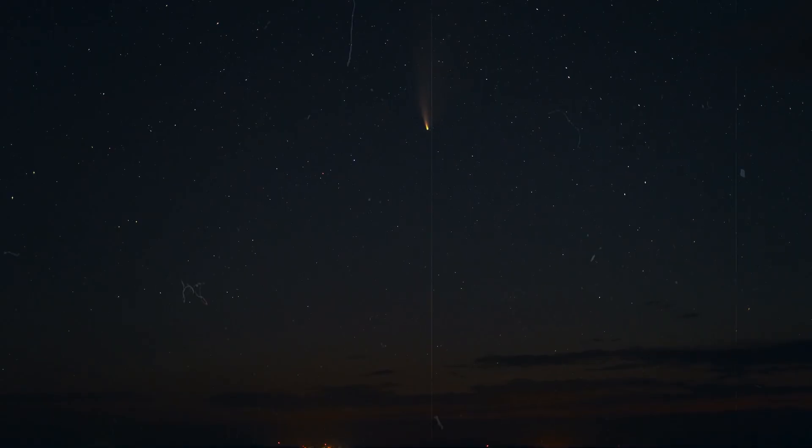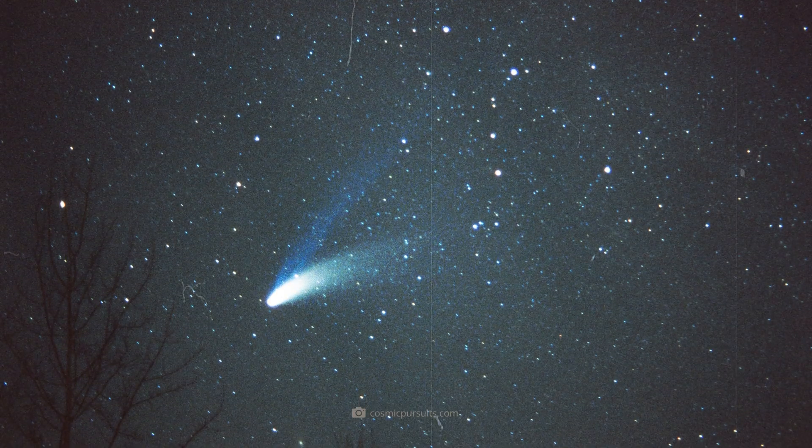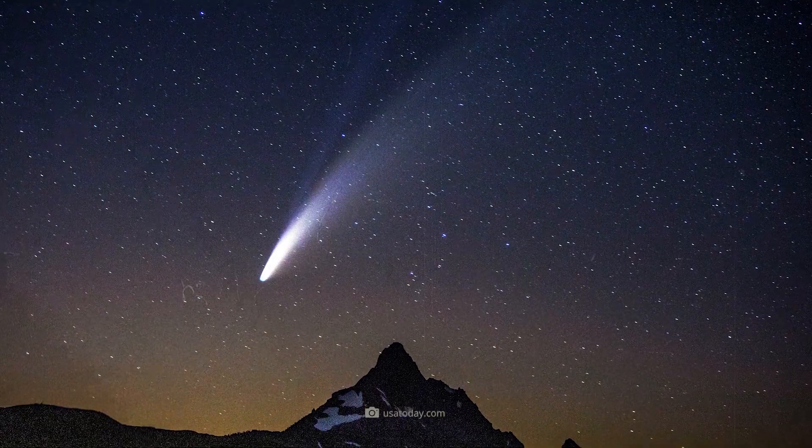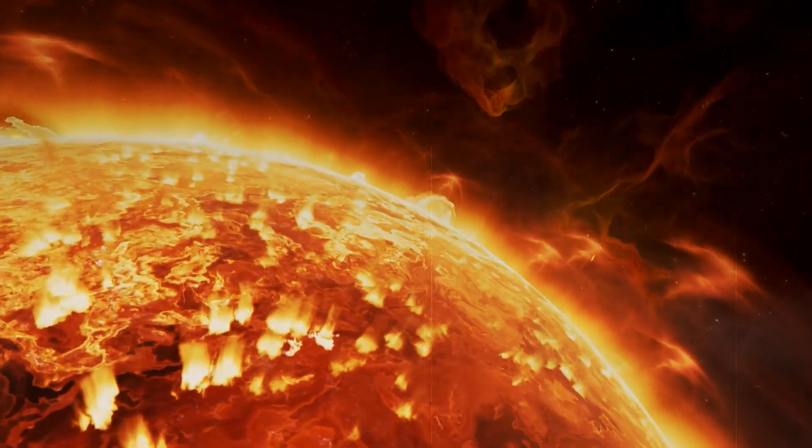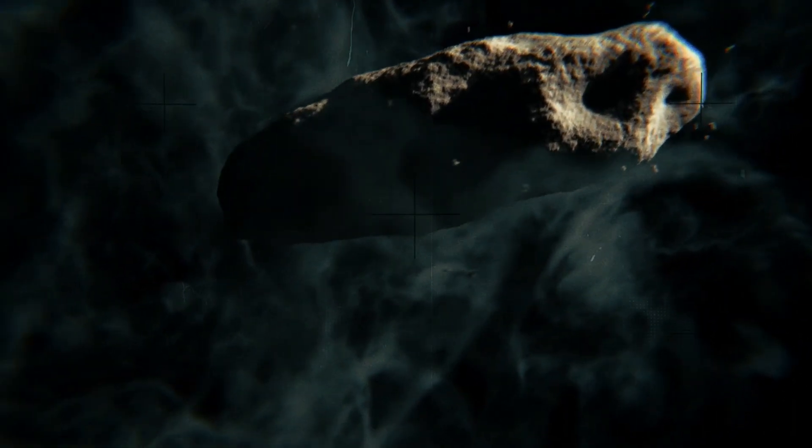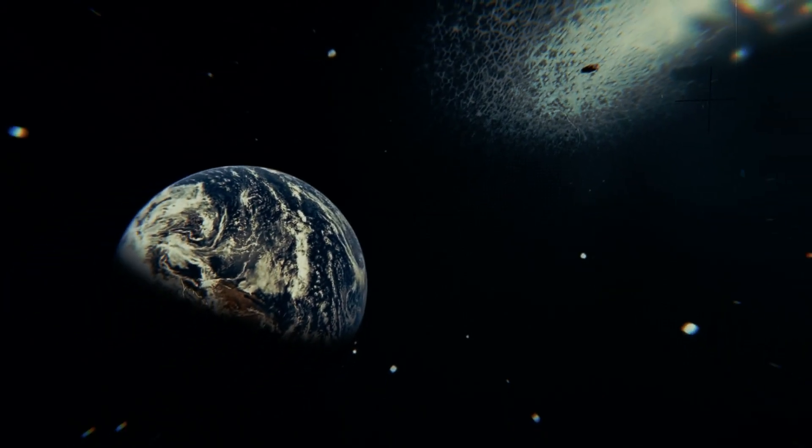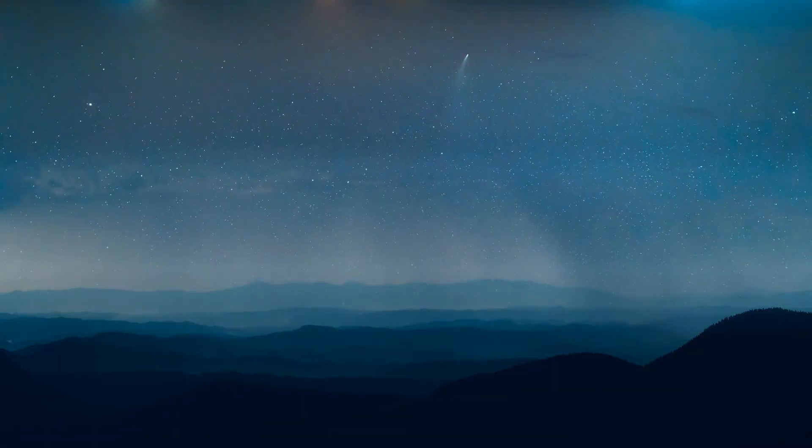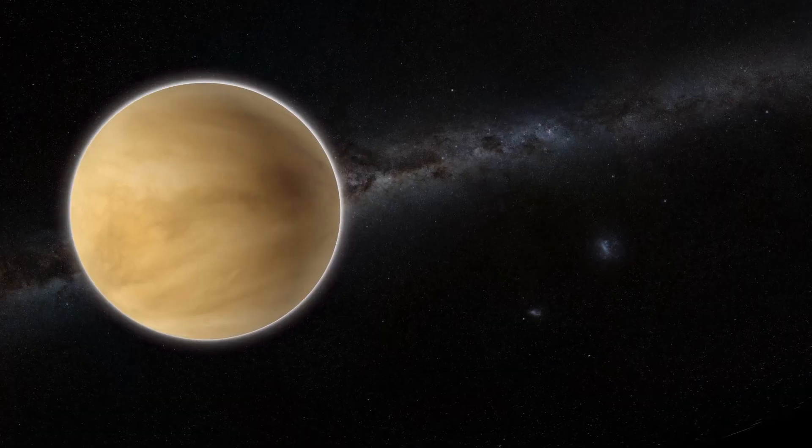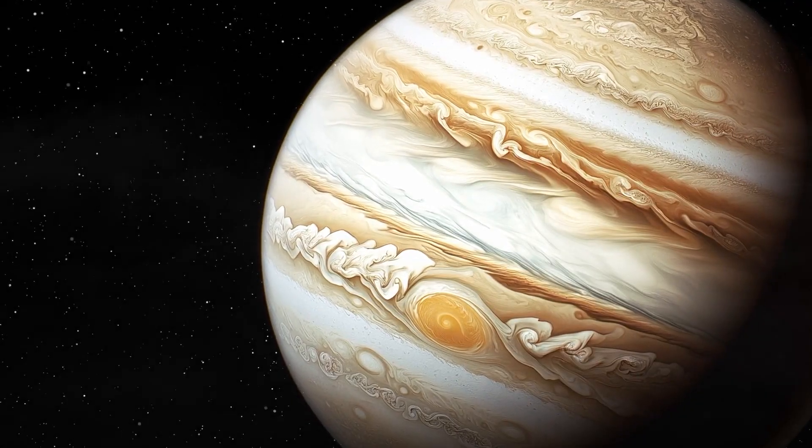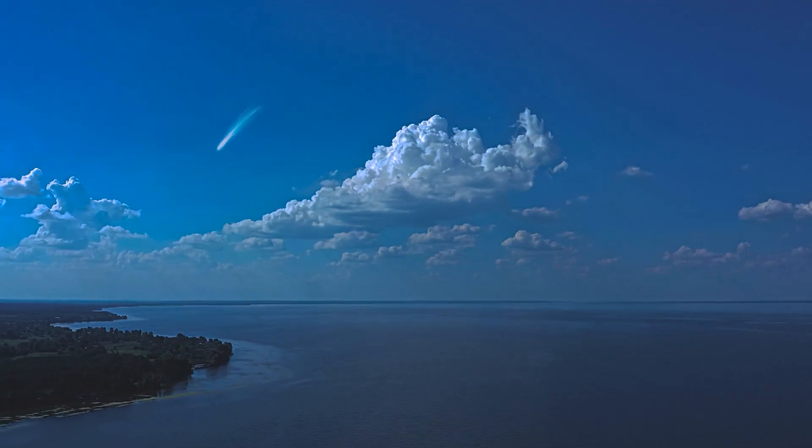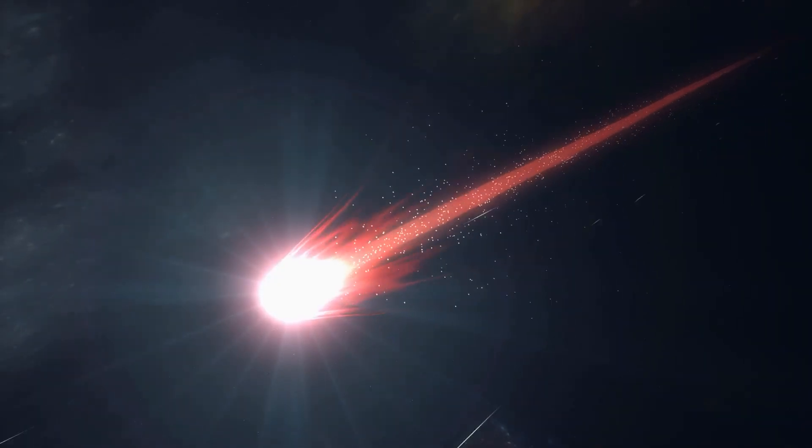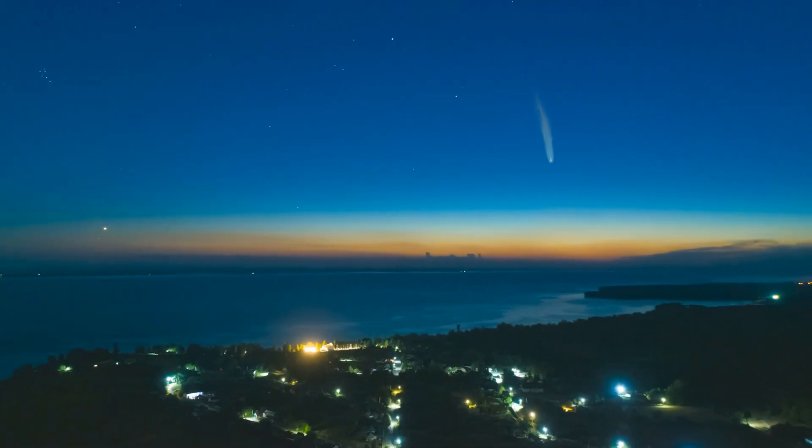A comet, even brighter than Hale-Bopp and Neowise, is on its way to us. When this new comet reaches its closest point to the Sun, it will then change direction and come towards us. Its brightness will dwarf that of the brightest stars, and even Venus and Jupiter will be outshone by the splendor of the comet for weeks.